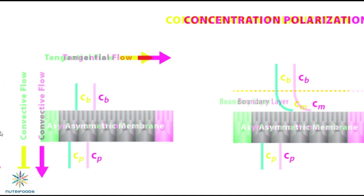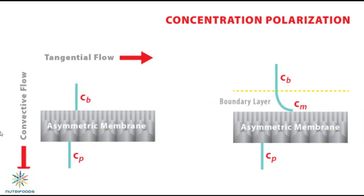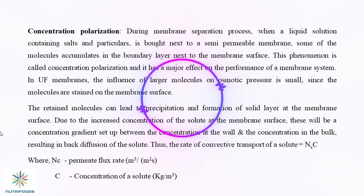During a membrane separation process, when a liquid solution containing salts and particles is brought next to a semi-permeable membrane, some of the molecules accumulate in the boundary layer next to the membrane surface. This phenomenon is called concentration polarization, and it has a major effect on the performance of the membrane system.